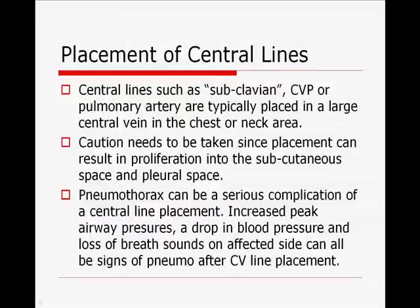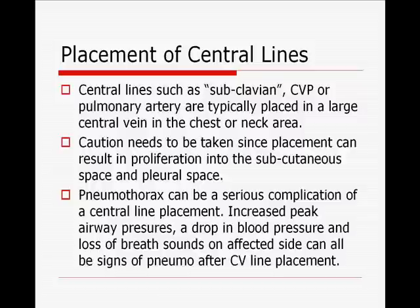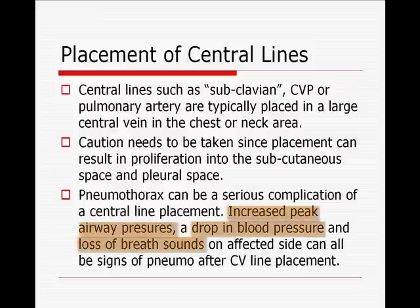Central lines — also known as subclavian lines, CVP lines, or pulmonary artery lines — are typically placed in a large central vein in the chest or neck area. One thing to remember is that these types of lines could perforate out of the large vein and actually puncture the subcutaneous or pleural space. One of the complications of any central line placement is the possible formation of a pneumothorax. If a central line is being placed and the person develops high peak airway pressures, a drop in blood pressure, or a loss of breath sounds on the affected side, think pneumothorax — which is the number one serious complication — and it would require placement of a chest tube.